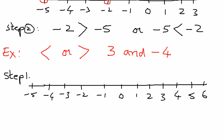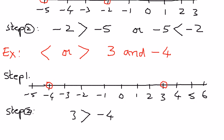We'll identify the two numbers given to us. Positive 3 is on the right side of the origin. Negative 4 is on the left side of the origin. Therefore, 3 is greater than negative 4. That's how we identify the correct inequality symbol between these two numbers. One is a positive number, the other is a negative number. The negative number will always be less than a positive number.